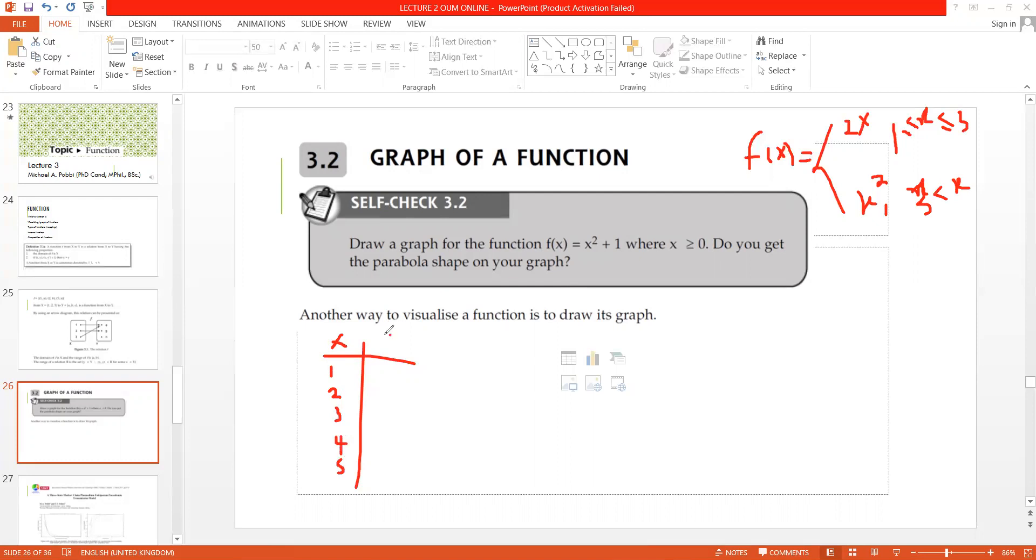Then we have f of x. Now, when x equals 1, the function is 2x. It's on this function. So it's going to be 2 times 1, which is 2. When x equals 2, it will be 2 times 2, which is 4. When x equals 3, you have 2 times 3, which is 6.